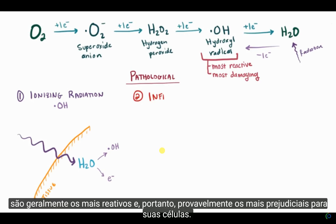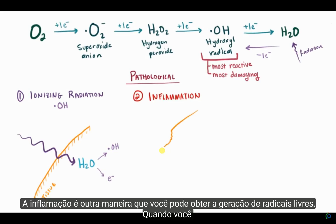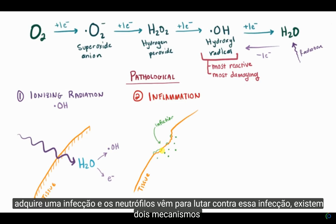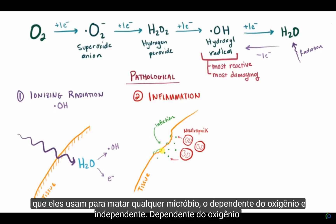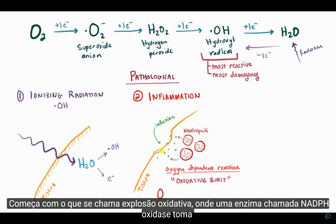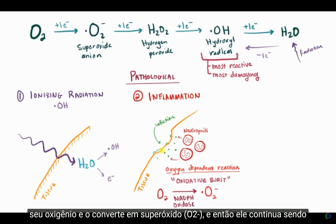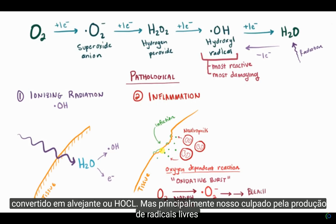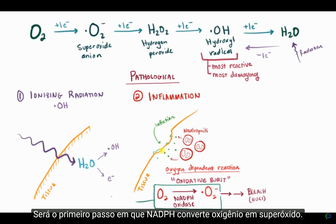Besides ionizing radiation, inflammation is another way that free radical generation can occur. When you get an infection and neutrophils come by to fight that infection, there are two mechanisms they use to kill the microbe, one of which is oxygen-dependent. This usually starts with what's called an oxidative burst, where an enzyme called NADPH oxidase takes your oxygen and converts it to superoxide. Then it goes on to eventually be converted into bleach, or HOCl. But mainly our culprit for producing free radicals is this first step, where NADPH oxidase converts oxygen to superoxide.